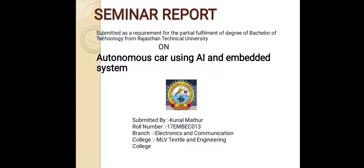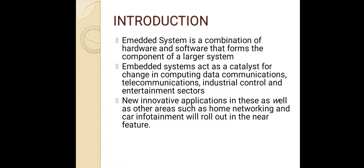Let's understand what Embedded Systems and AI actually are. An Embedded System can be thought of as a computer hardware system having software embedded in it, and can be used to perform a dedicated function, or as an independent system, or as part of a larger system. AI — Artificial Intelligence — is giving human intelligence to machines. It works by combining large amounts of data with fast iterative processing and intelligent algorithms, allowing the software to learn automatically from patterns or features in the data.